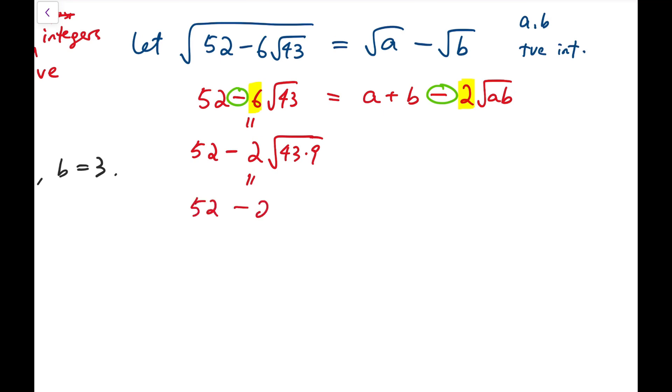So consider 2 numbers with sum 52 and the product to be 387. Now if I solve this I can get a to be 43, of course we want a to be a larger one because this has to be positive, and also b equals to 9.